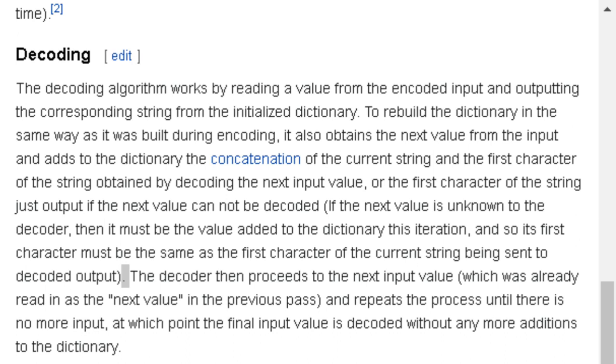Decoding: The decoding algorithm works by reading a value from the encoded input and outputting the corresponding string from the initialized dictionary. The next sentence is about to be a run-on sentence, just a warning. To rebuild the dictionary in the same way as it was built during encoding, it also obtains the next value from the input and adds to the dictionary the concatenation of the current string and the first character of the string obtained by decoding the next input value, or the first character of the string just output if the next value cannot be decoded. If the next value is unknown to the decoder, then it must be the value added to the dictionary this iteration, and so its first character must be the same as the first character of the current string being sent to decoded output.